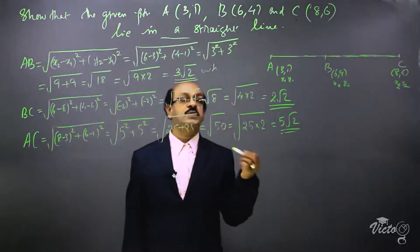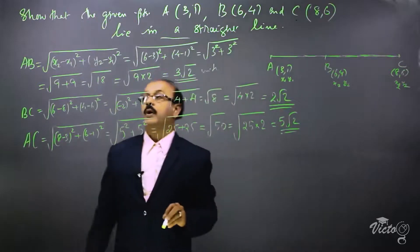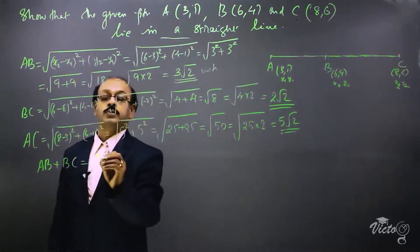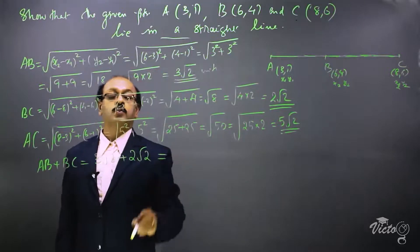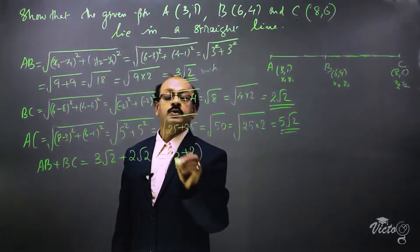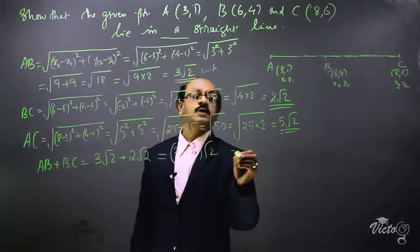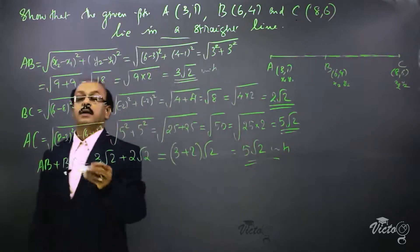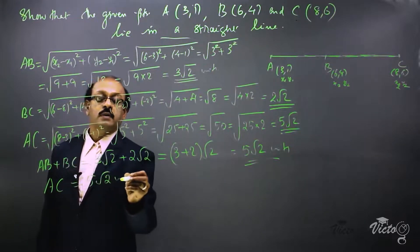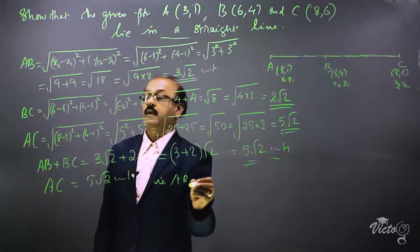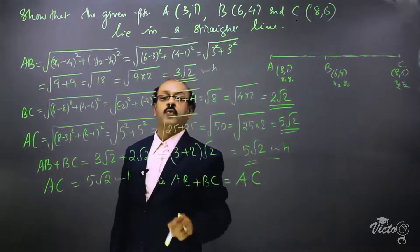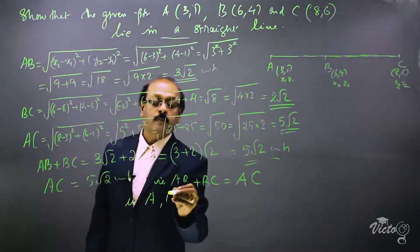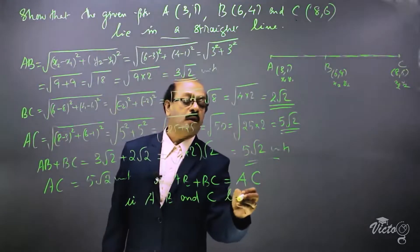Now check whether AB + BC = AC. AB + BC = 3√2 + 2√2. Taking √2 as common: (3 + 2)√2 = 5√2 units. We got AB + BC = 5√2, and AC is also 5√2 units. Therefore AB + BC = AC, which means A, B, and C lie in a straight line.